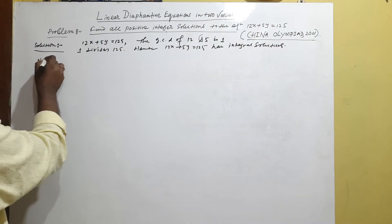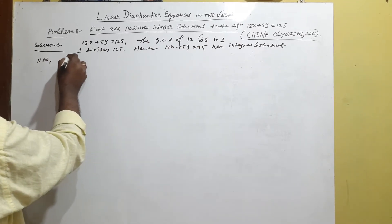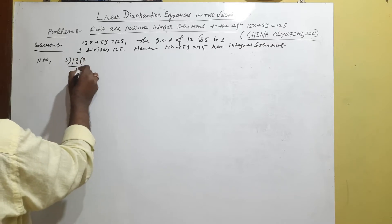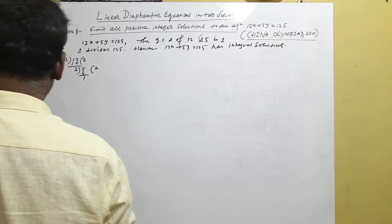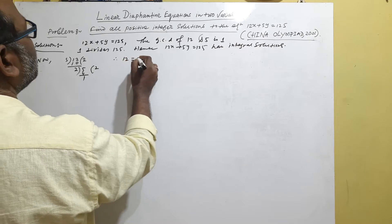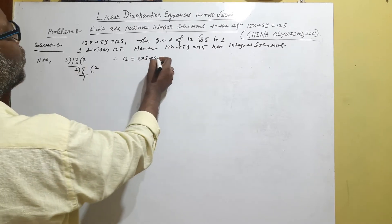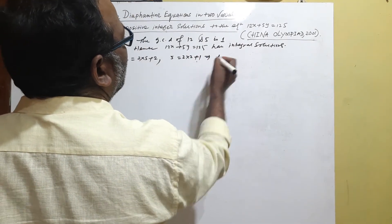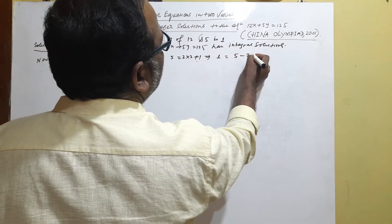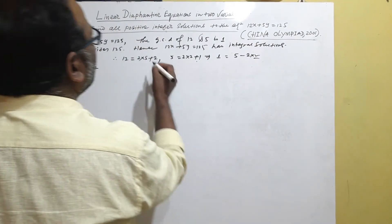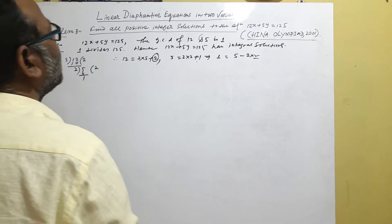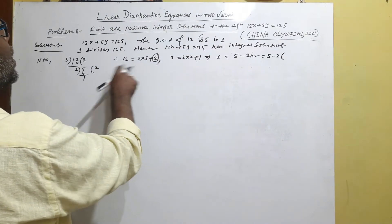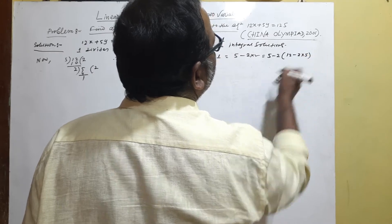Now, if we divide 12 by 5: 12 = 2×5 + 2, and then 5 = 2×2 + 1. So therefore 12 = 2×5 + 2, and 5 = 2×2 + 1. From here, 1 can be written as 5 minus 2×2. In place of 2 we substitute 12 minus 2×5, giving 1 = 5 minus 2×(12 minus 2×5).